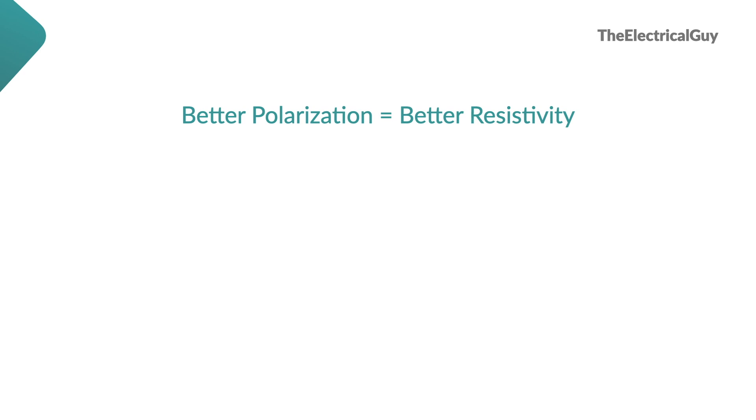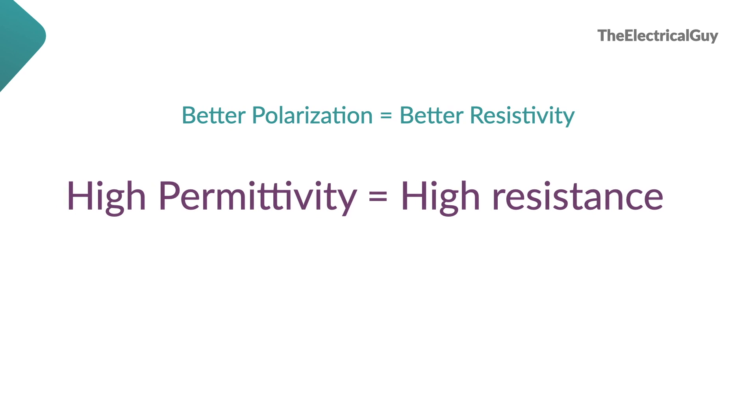Permittivity measures the opposition offered by a medium or a material to an external electric field. If the permittivity of a medium is higher that means the molecule of that medium polarizes better and hence they offer more resistance to the external electric field.